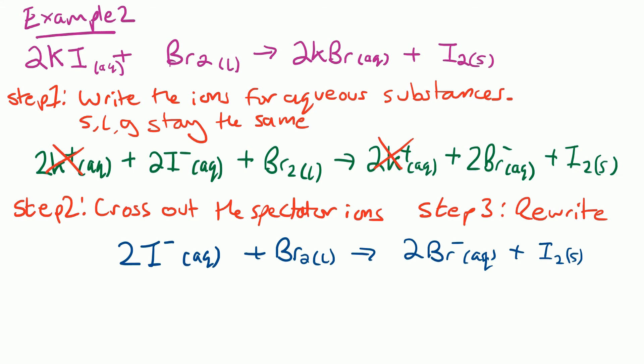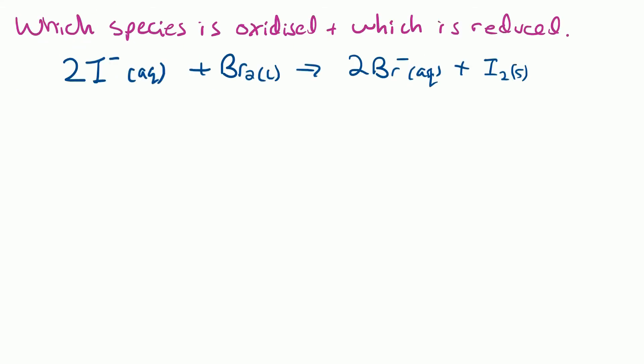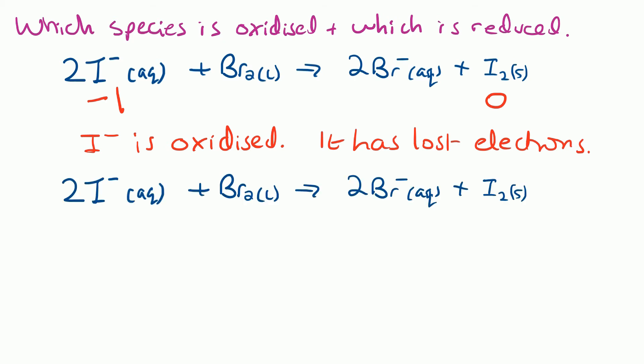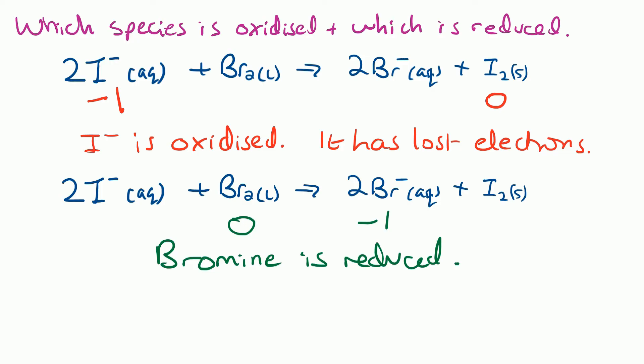It might ask us which species is oxidized and which is reduced. We'll pick iodine and write the oxidation numbers underneath. It's going from −1 to 0, so the oxidation number is increasing — it's been oxidized. If the question asks to talk in terms of electrons, remember oxidation is loss, so it must have lost electrons. The other species, bromine, has gone from 0 oxidation number to −1, so it's been reduced. Reduction is gain, so bromine must have gained electrons.